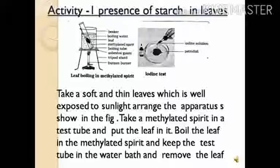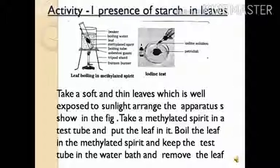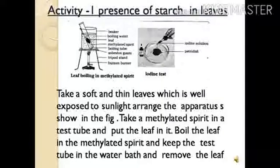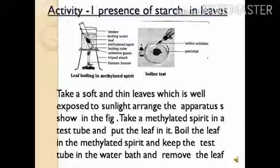Activity 1: Testing the presence of starch in a leaf. Plants carry out photosynthesis, taking in CO₂ and water and producing glucose, water, and oxygen. To test the presence of starch in a leaf, we need methylated spirit. Take a soft, thin leaf that has been well exposed to sunlight. Place the leaf in a test tube containing methylated spirit, then place that test tube in a water bath — a beaker filled with water — and heat it.